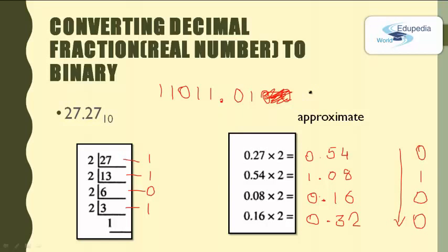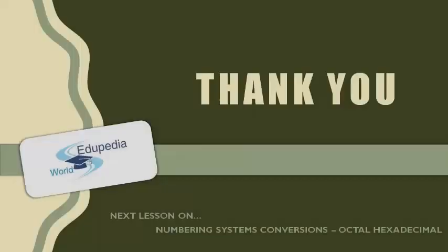The final output is 11011.0100, which is the binary equivalent of the decimal value 27.27. With that we are going to wind up this session and continue in the next episode to discuss the octal and hexadecimal numbering systems. In this episode we discussed the binary and decimal numbering systems and how to perform conversions between them, especially on the fractional parts. See you in the next episode — thank you for watching and stay tuned with Allupedia World.